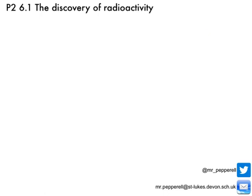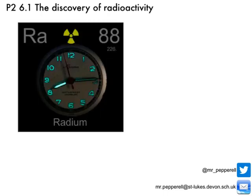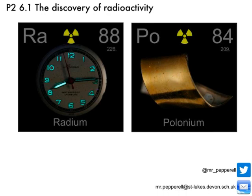That wasn't Marie Curie's only discovery. She went on to receive a second Nobel Prize because she discovered a number of previously unknown elements. The first was radium, which used to be used to make the luminous numbers on clock dials. She also discovered the element polonium, which she named after her home country of Poland.